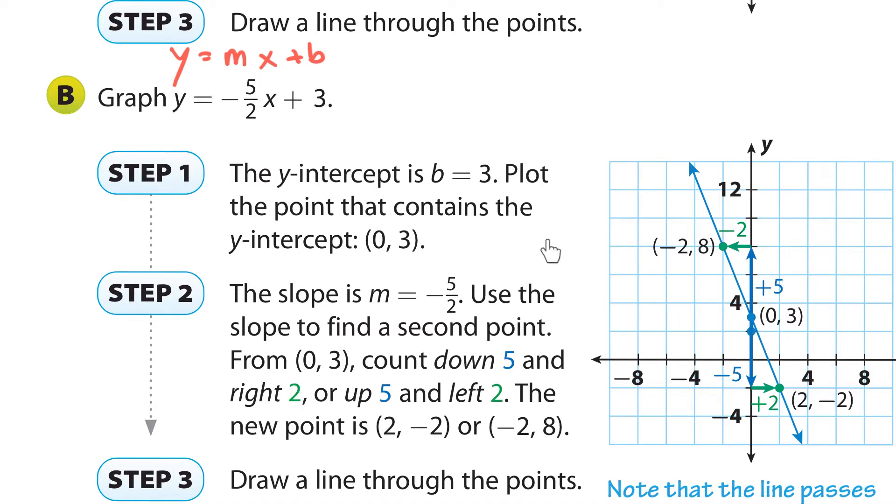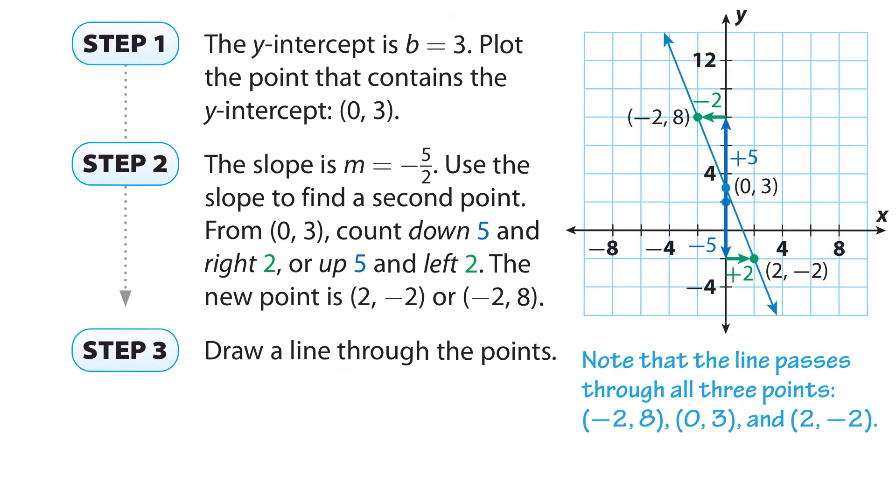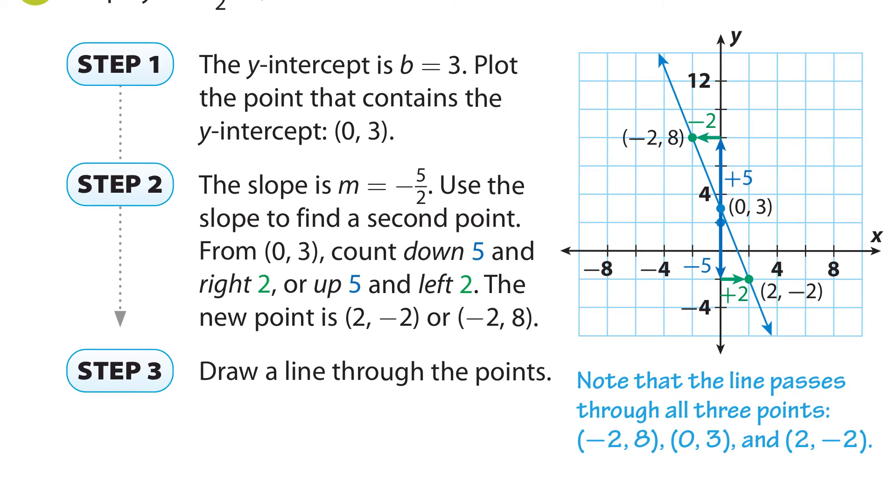And from that y-intercept, we use our slope of negative five-halves, down five, and to the right two. So five, one, two, three, four, five, and to the right two. And if you go down five and to the right two, you can go up five, one, two, three, four, five, and to the left two. And that's all on the same line. Done deal. Super easy.